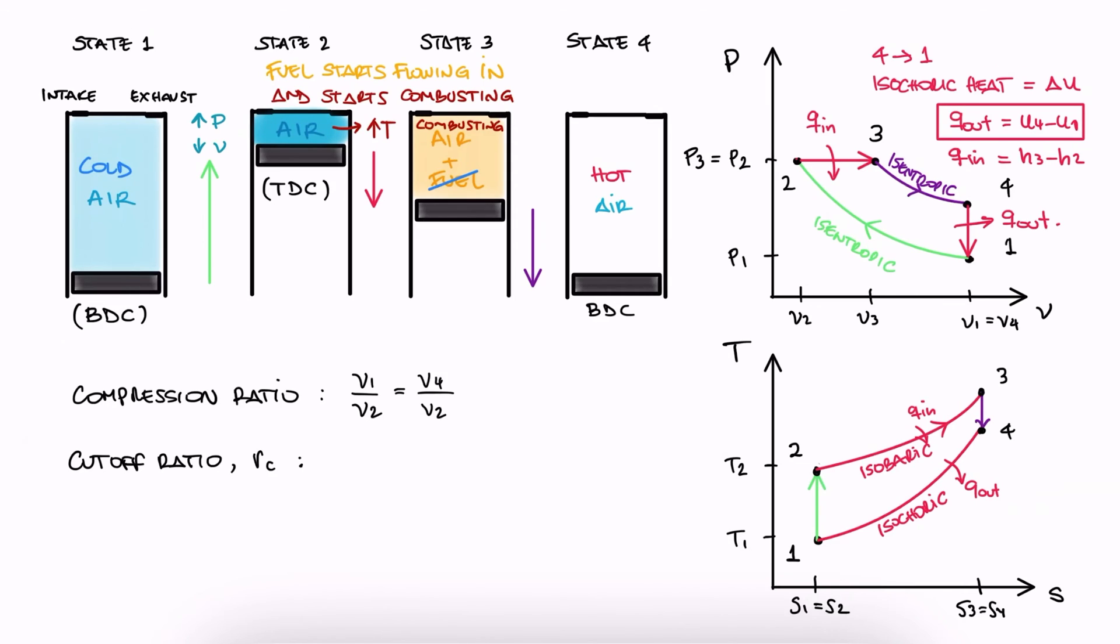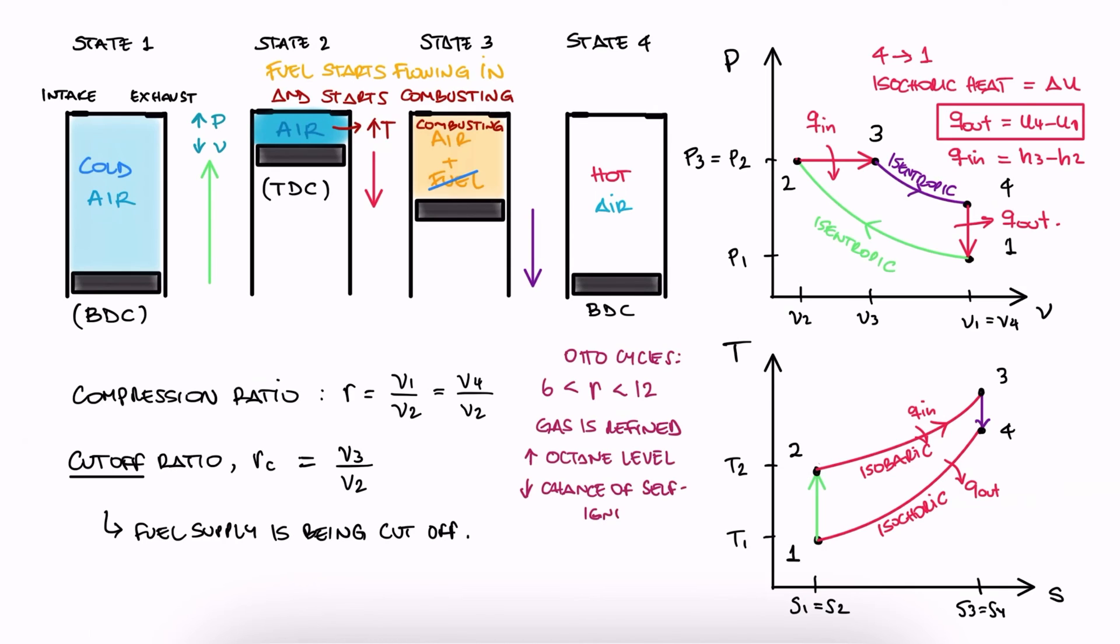This is the ratio between the volume after and before the combustion process. It's called cutoff because state 3 is when the fuel stops being injected. Compression ratios are usually around 6 to 12 for spark ignition engines because we don't want them to self-ignite. Additionally, fuels like gasoline have to be refined so that they don't combust before we want them to. This is closely related to the octane levels. The higher the octane levels, the less likely the gas will combust at an incorrect time. But that's a whole other topic.